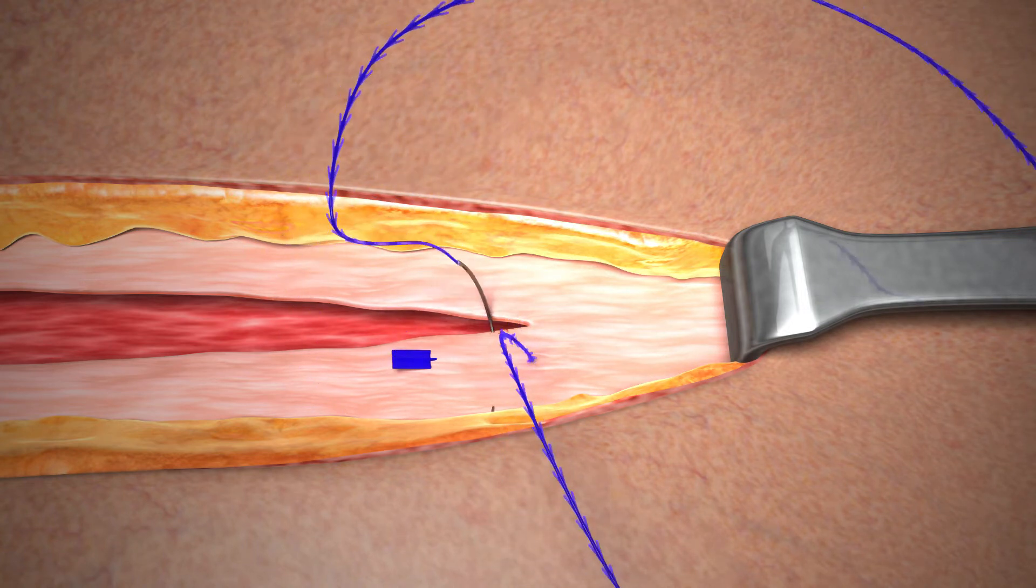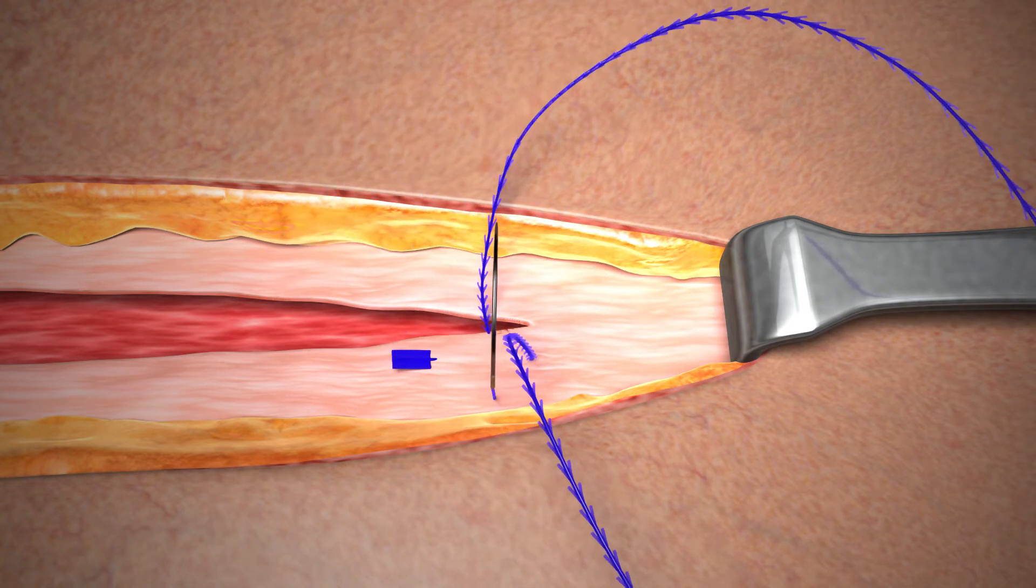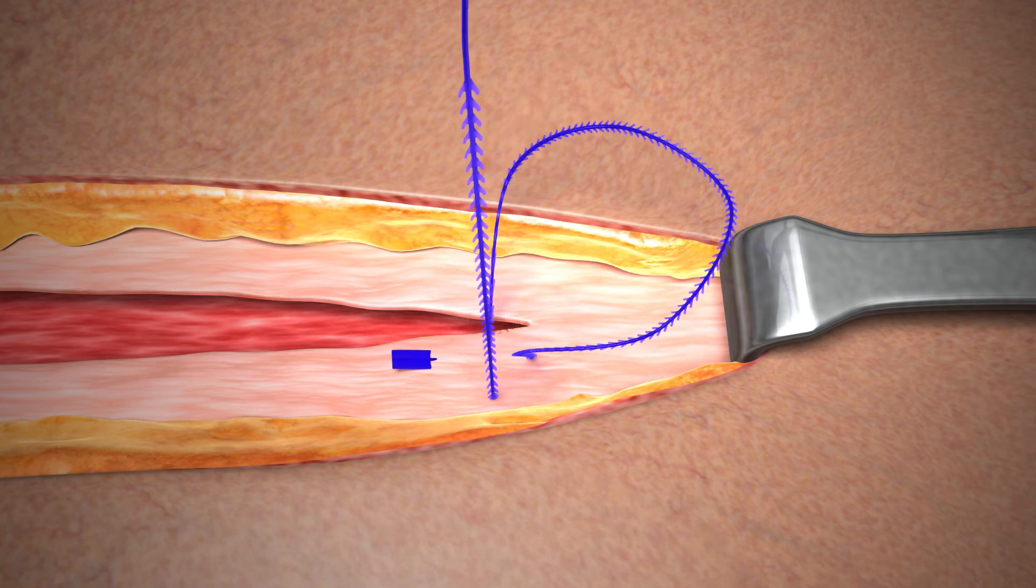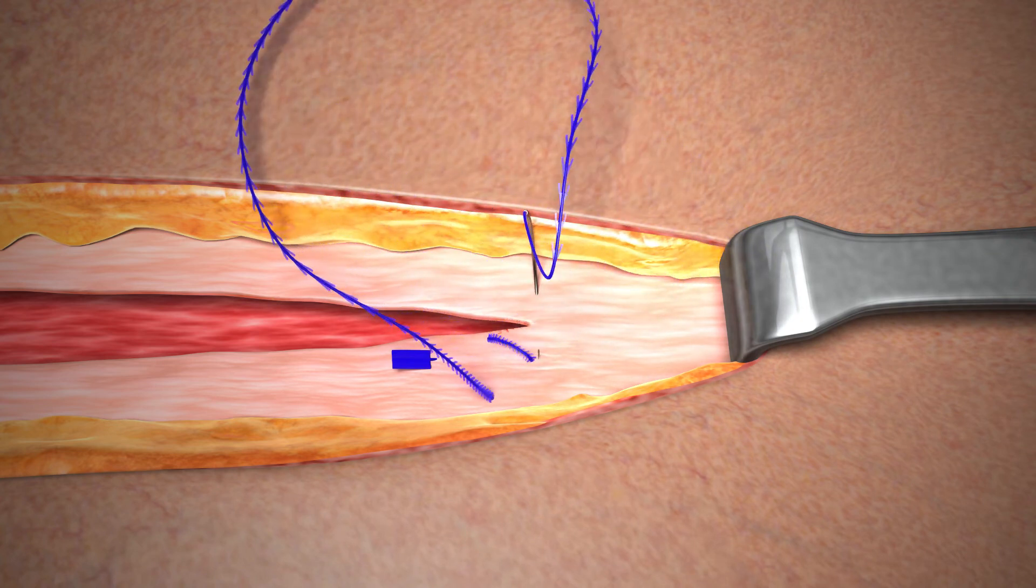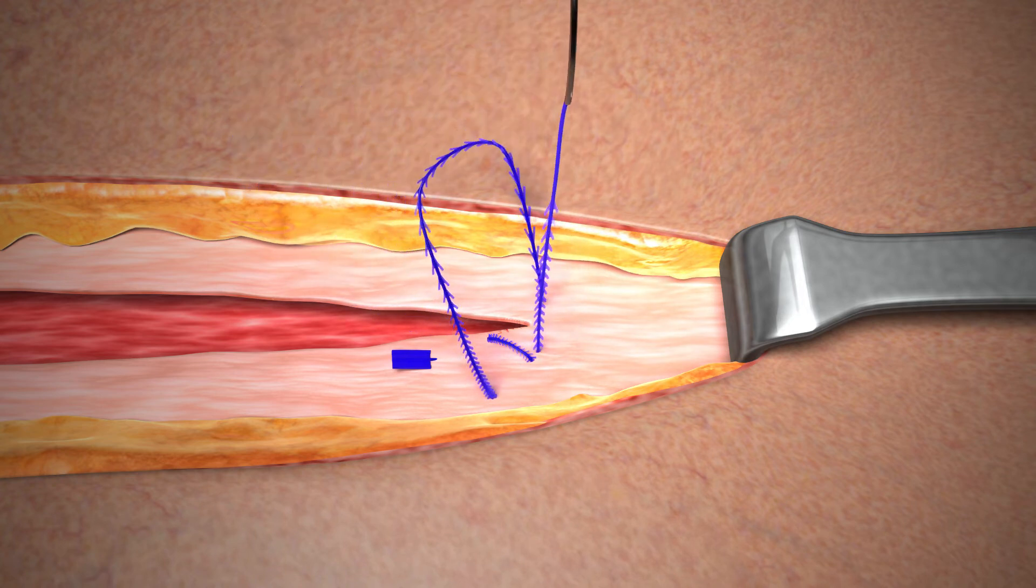Moving toward the apex of the incision take a pass in intact tissue perpendicular to the initial pass to lock the stitch. Multiple passes are acceptable. Pull gently on the device to take up any slack.